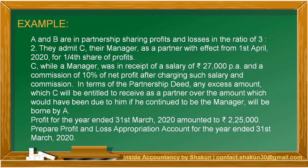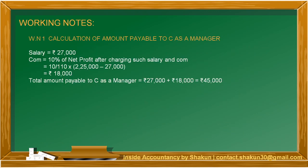As discussed, first we calculate the amount payable to C as a manager. As a manager, he will get salary of ₹27,000 per annum. He was also supposed to get commission of 10% on net profit after charging such salary and commission. Since commission is charged after itself, we adjust the rate: 10/110 × (₹2,25,000 − ₹27,000), which gives a commission of ₹18,000. So the total amount payable to C as a manager is ₹27,000 + ₹18,000 = ₹45,000.